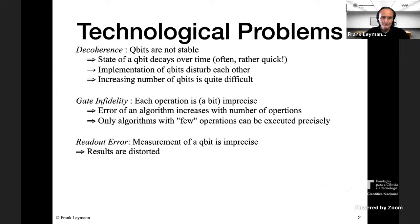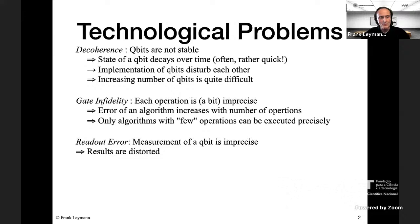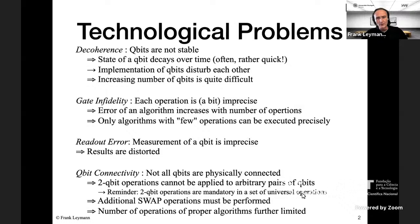We also have readout errors: measurements of qubits are imprecise, so the results from a quantum computer are typically distorted and need correction. Finally, we need to cope with qubit connectivity, because not all qubits in a quantum processing unit (QPU) are physically connected. This is especially important for two-qubit operations, which are mandatory in a universal gate set, meaning additional operations must be introduced.